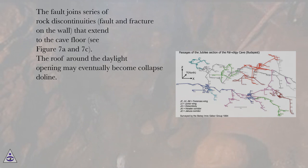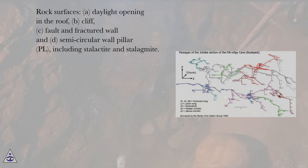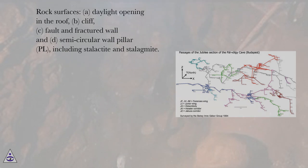The roof around the daylight opening may eventually become collapsed. Rock surfaces include: a) daylight opening in the roof, b) cliff, c) fault and fractured wall, and d) semicircular wall pillar (pl), including stalactite and stalagmite.